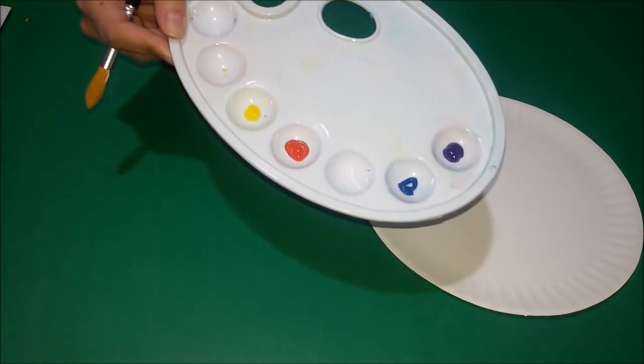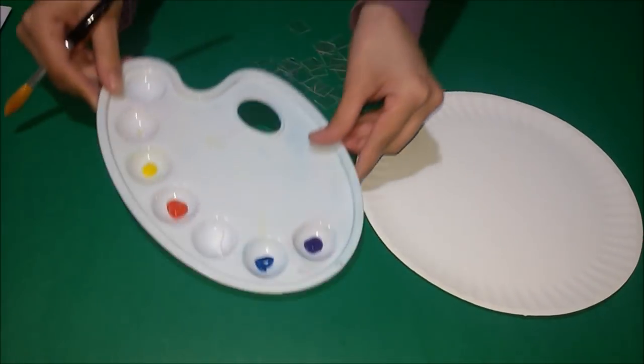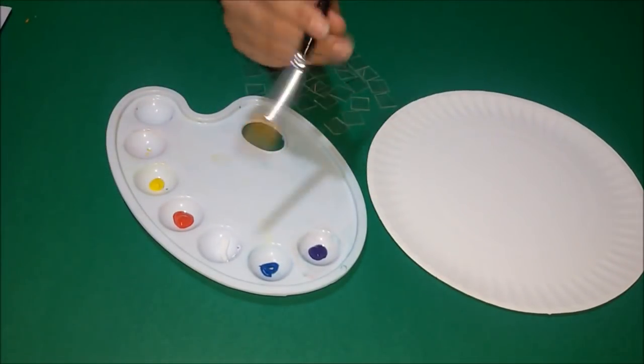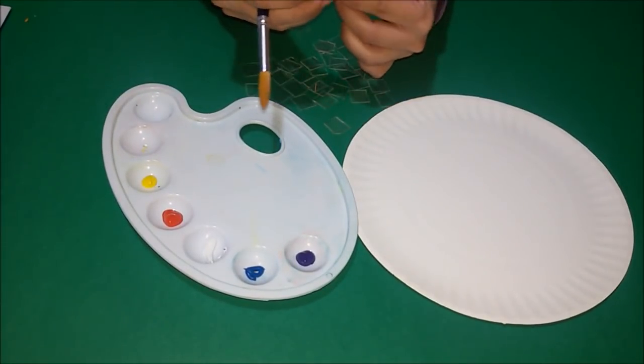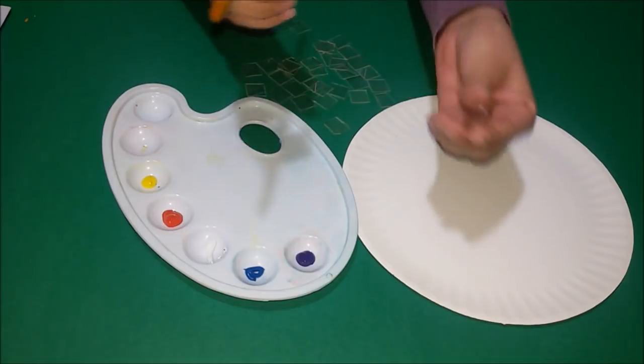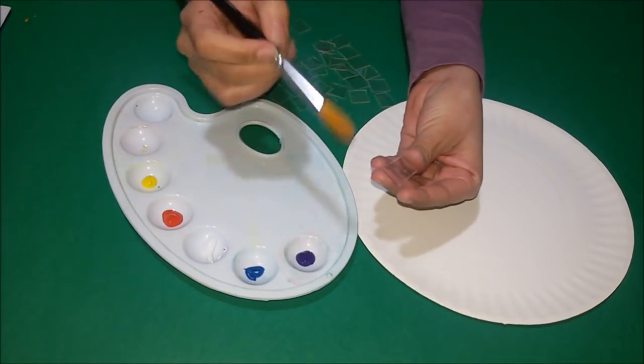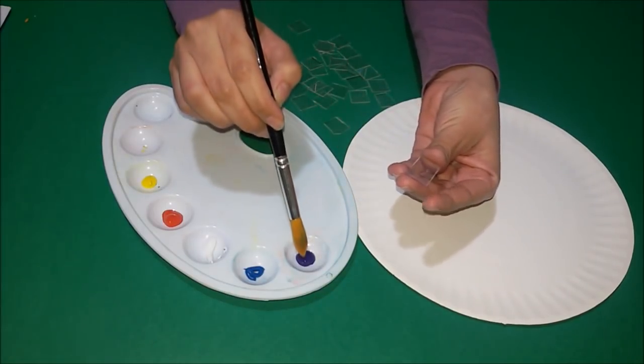In this second part, we are going to use the colors that I told you in the list of materials, and we use a brush also. What we want to do is put some paint over it first. We put a layer of paint.